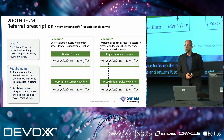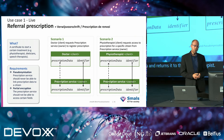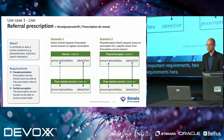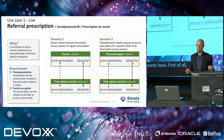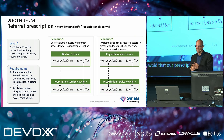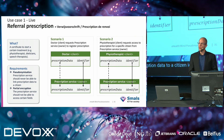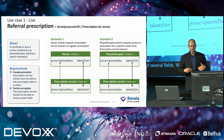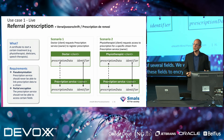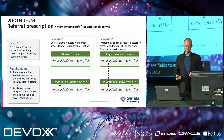There are two important security requirements. First, pseudonymization: we want to avoid that our prescription service can link prescription data to a citizen identifier. Second, partial encryption: the prescription data consists of several fields, and we want to select a number of these fields to encrypt in such a way that our prescription service cannot decrypt this data.